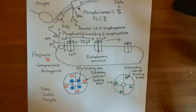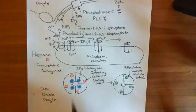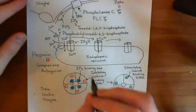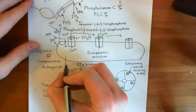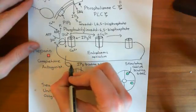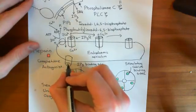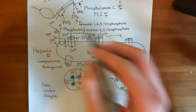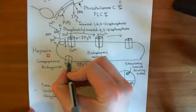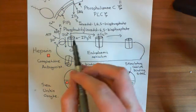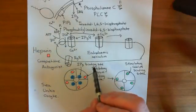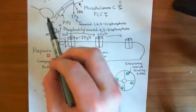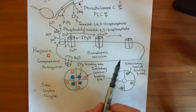Why did heparin fail to block the calcium wave completely in the sea urchin oocyte? What happens in the sea urchin oocyte is that it's not just IP3 receptors that are involved in this calcium wave. There seems to be another receptor called the ryanodine receptor. This ryanodine receptor also seems to be being activated in this process and is involved in the calcium wave. So if you just block the IP3 receptors, the ryanodine receptors are still there and can release calcium. The mechanisms of how the sperm touching activates the ryanodine receptors are not well understood.